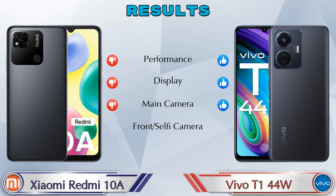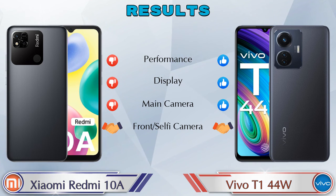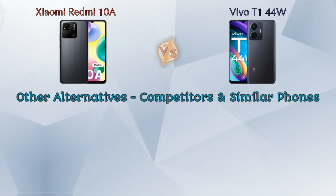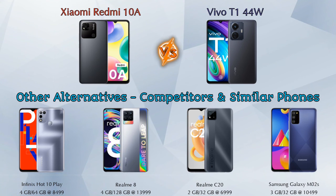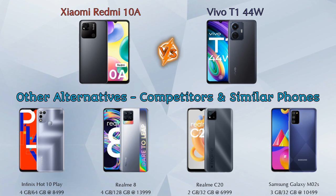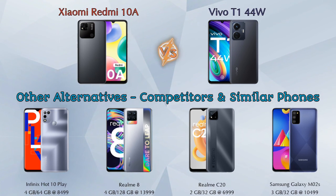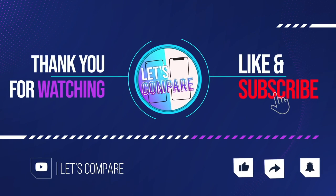Finally, talking about results: in performance, the T1 44W is ahead. In display, the T1 44W is ahead. In main camera, the T1 44W is ahead. In front selfie camera, both phones are the same. Other competitors at the same price include Infinix Hot 10 Play, Realme 8, Realme C20, and Samsung Galaxy M02s. Details about all competitor phones are available in the description. If you like our video, please like and subscribe — thanks for watching.